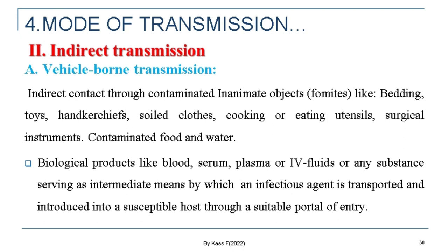Mode of transmission can also be indirect — which could be vehicle-borne or airborne. Vehicle-borne indirect transmission involves indirect contact through contaminated inanimate objects or fomites like bedding, toys, handkerchiefs, soil, clothes, surgical instruments, or contaminated food. It may also involve biological products like blood, serum, plasma, or IV fluids — any substance serving as an intermediate means by which an infectious agent is transported and introduced into a susceptible host through a suitable portal of entry.